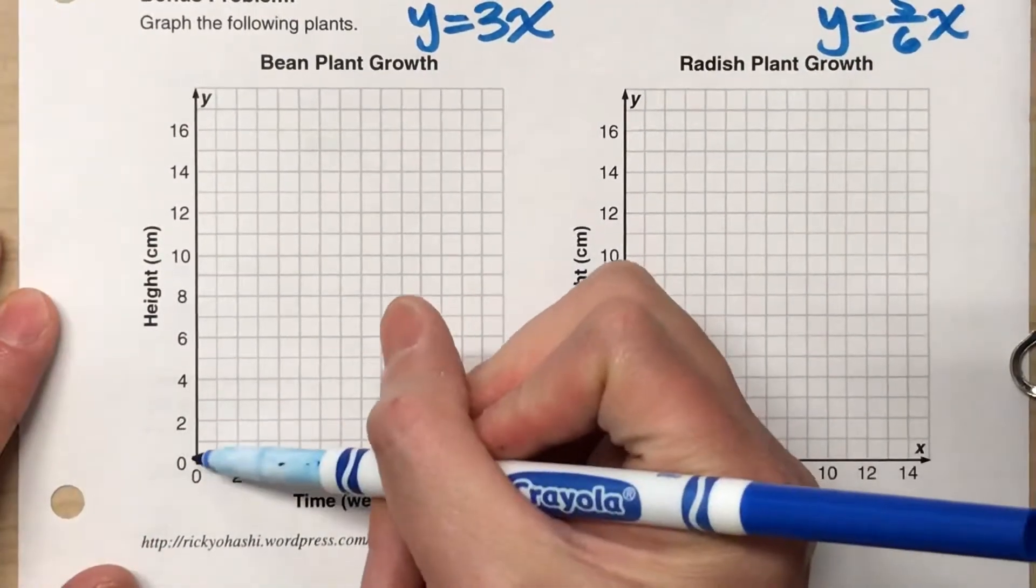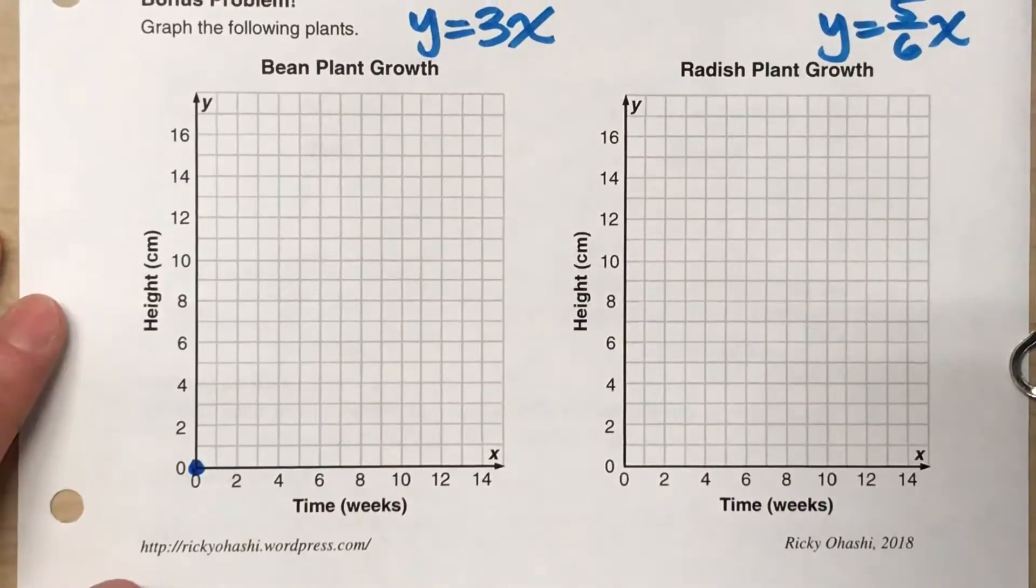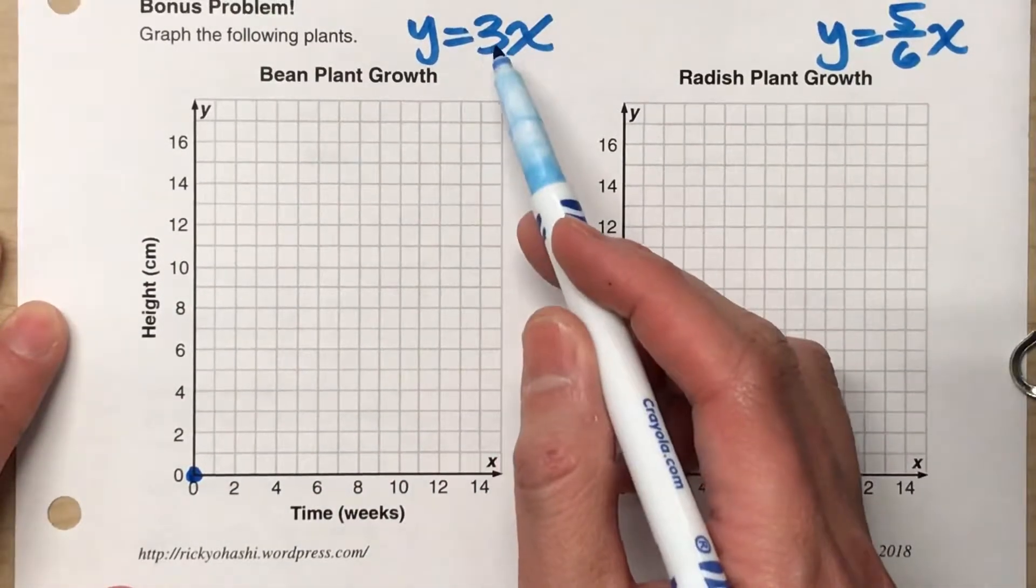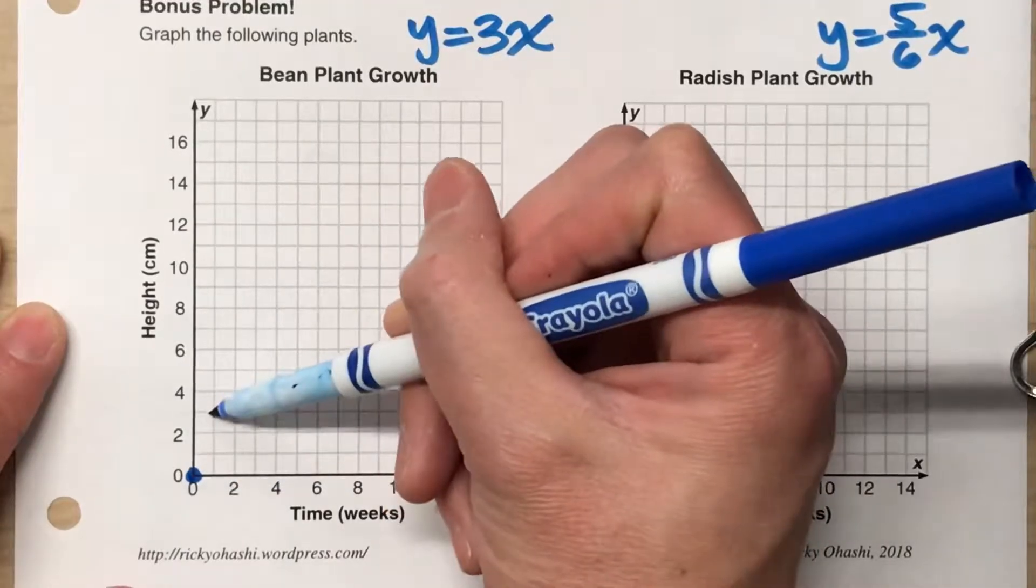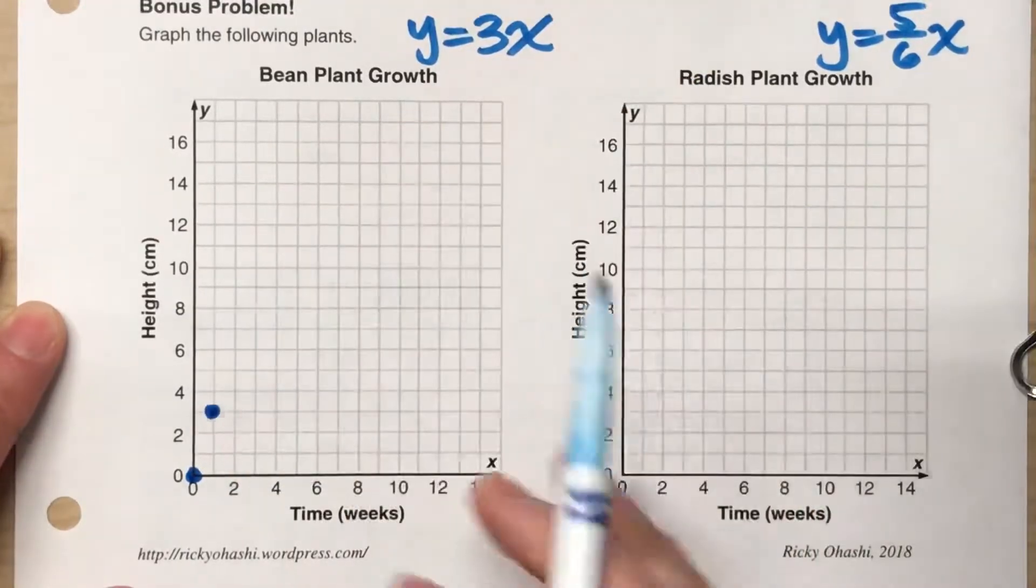we start at 0 for 0 weeks, but since it's growing 3 centimeters per week, after one week, it will be 3 centimeters.